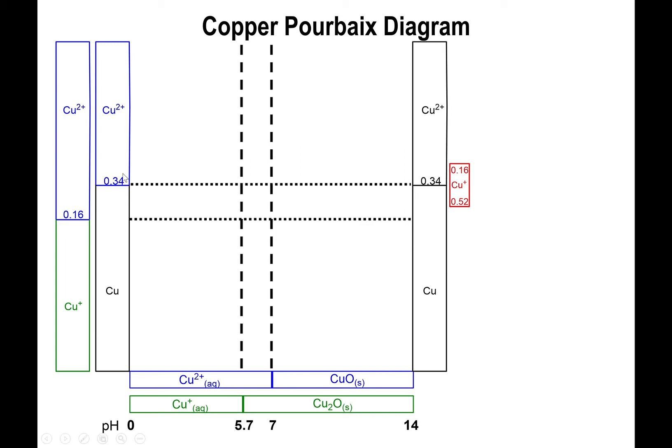And also, in the horizontal realm, we have to keep track of the 0.34 potential for copper 2 to copper 0, and the 0.16 potential for copper 2 to copper 1. All right, let's find out what ends up happening right here.